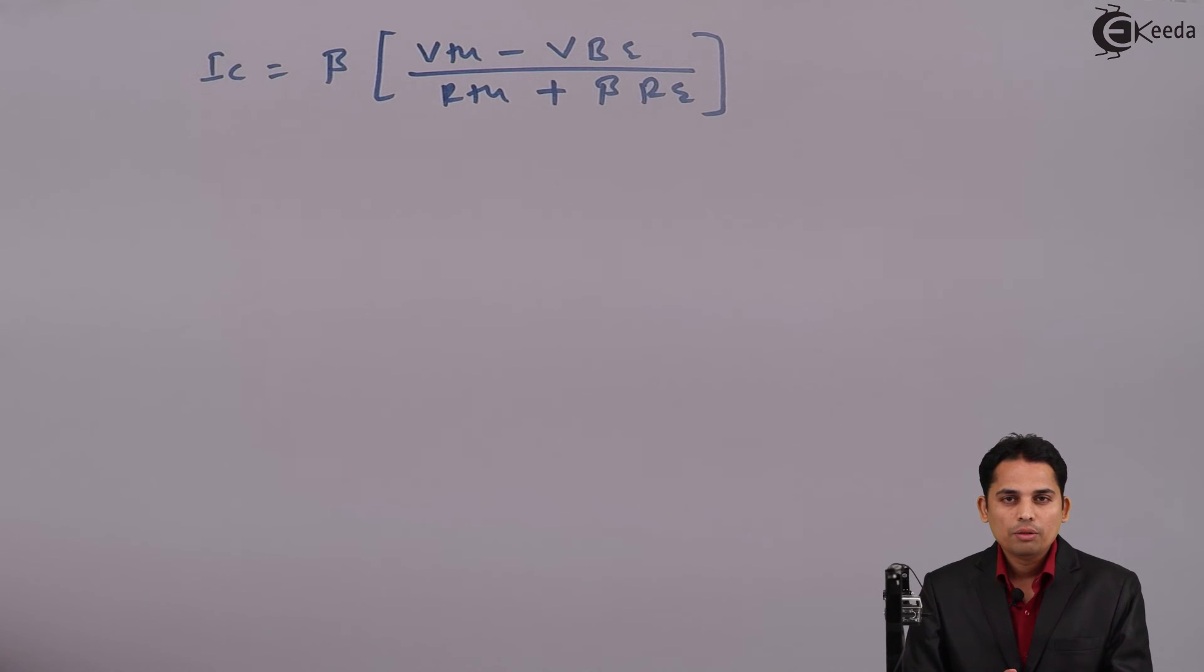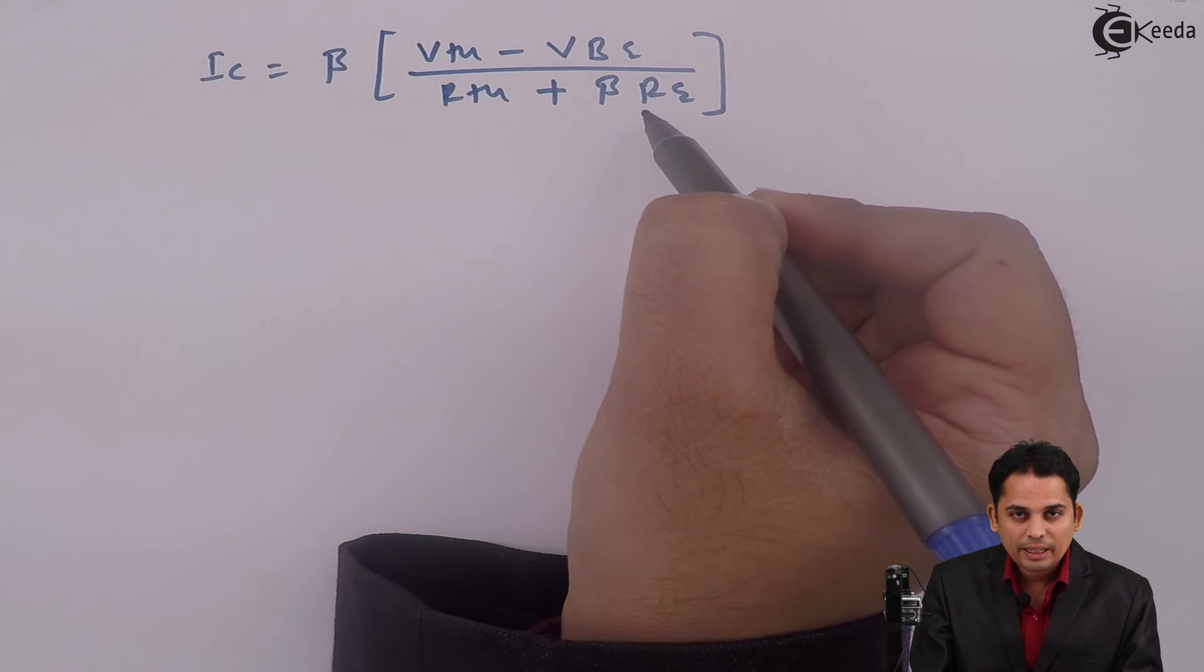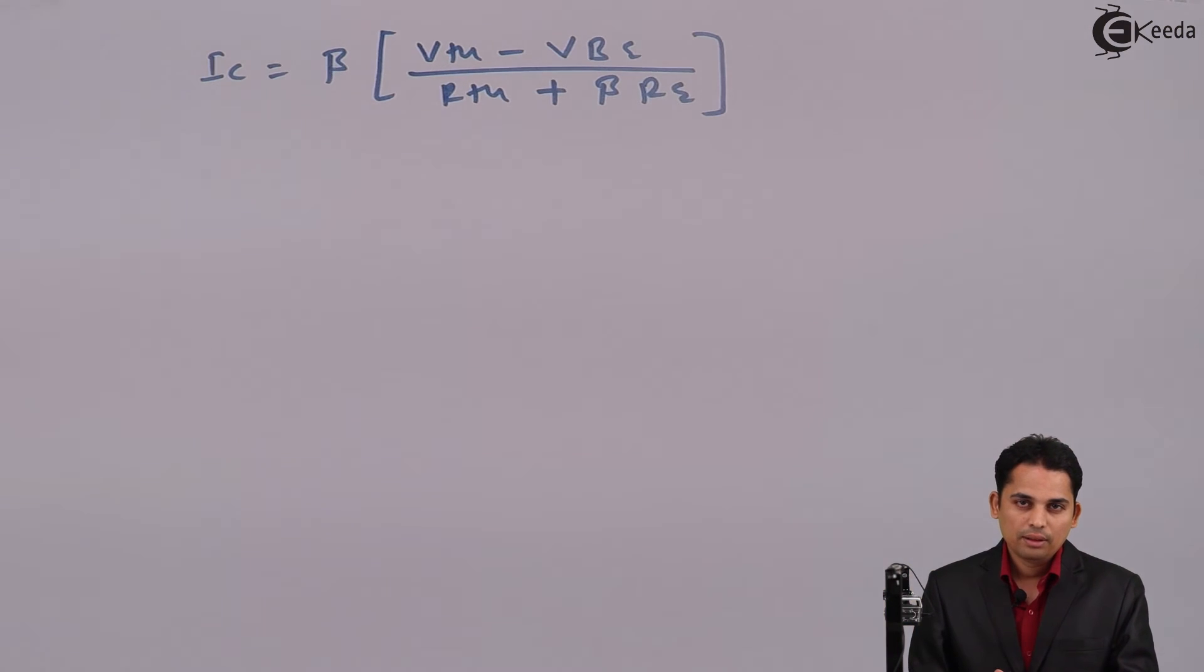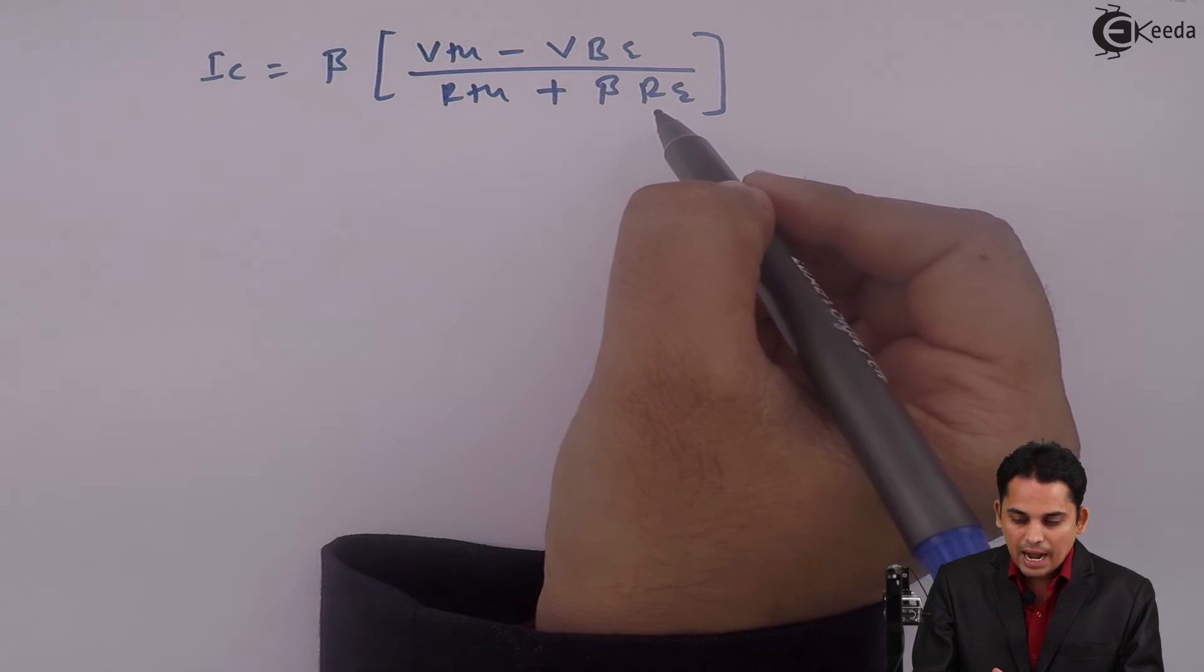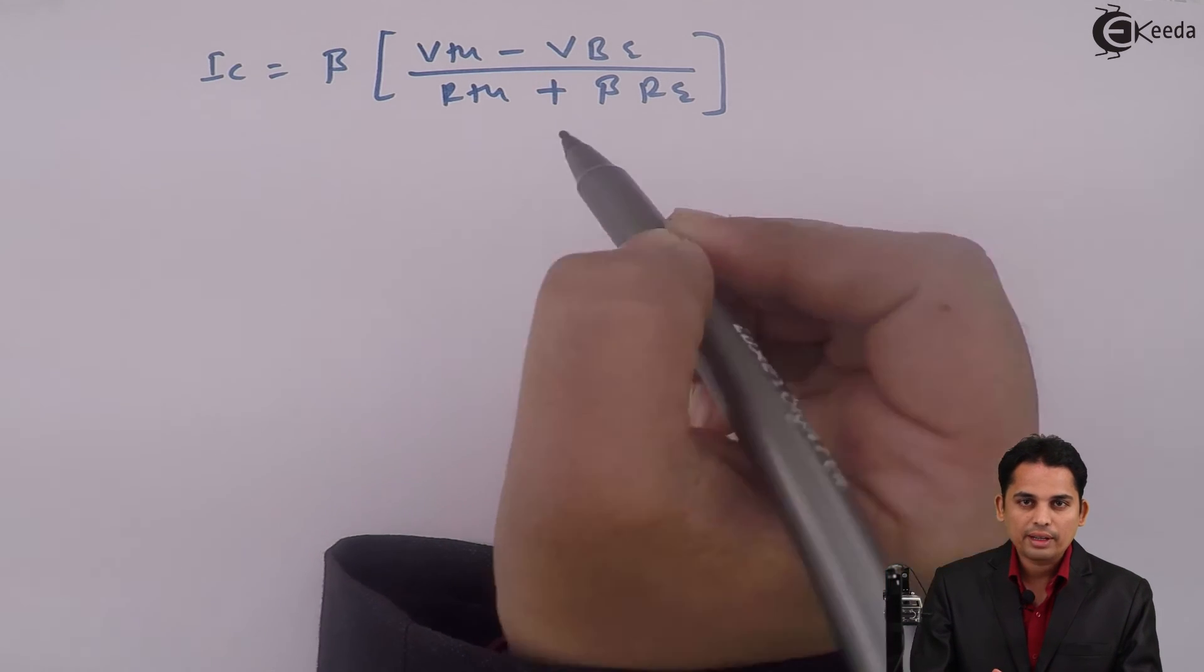Now we will write that beta times RE is greater than Rth. But we need to prove that first. Now we know that the value of RE and Rth will be in kilo-ohms, but this RE term is multiplied by beta, where beta value will be in the range of 100. And hence, we can say that beta RE is quite greater than Rth.